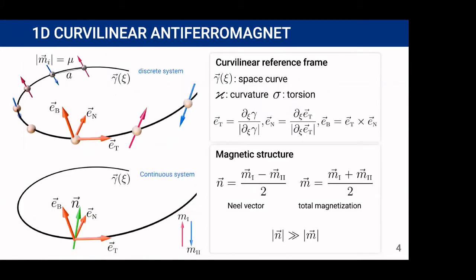Now let's proceed with the description of one-dimensional curvilinear antiferromagnets. In our study, we consider a chain of classical magnetic moments with antiferromagnetic coupling on the space curve gamma, characterized with curvature kappa and torsion tau. For such a curve, a local normalized Frenet reference frame with tangential, normal and binormal basis vectors can be introduced.